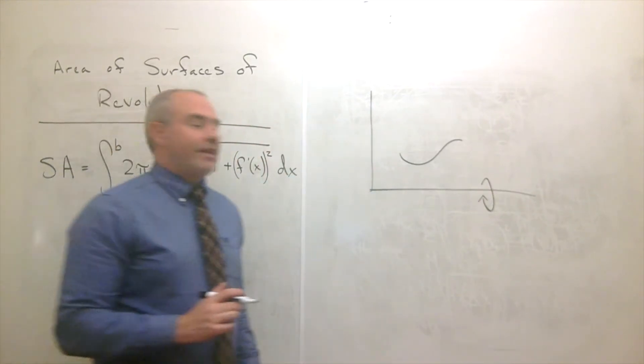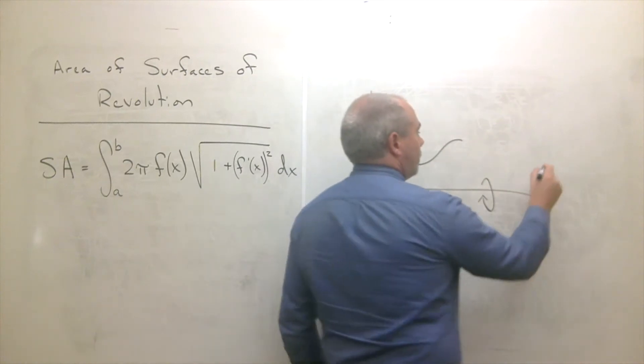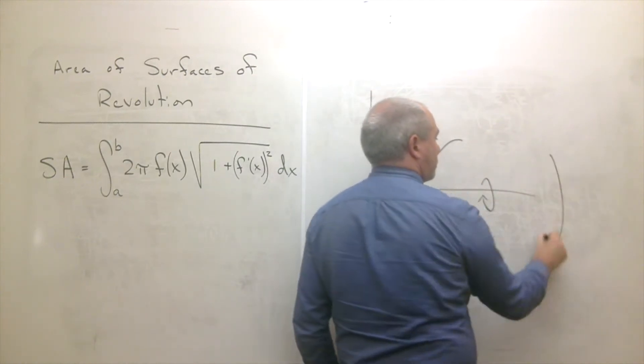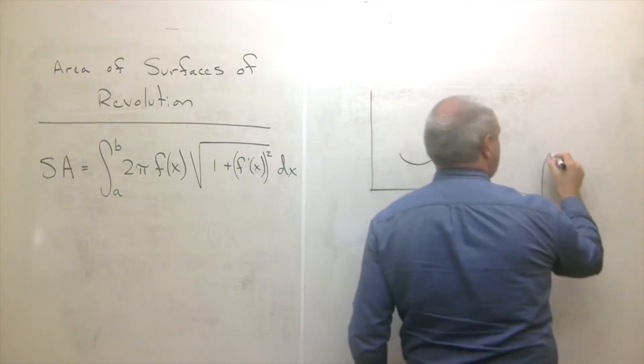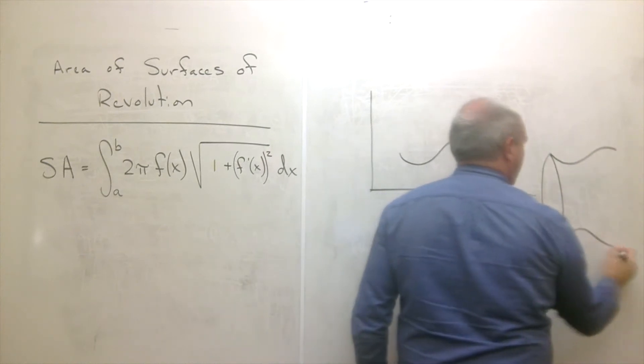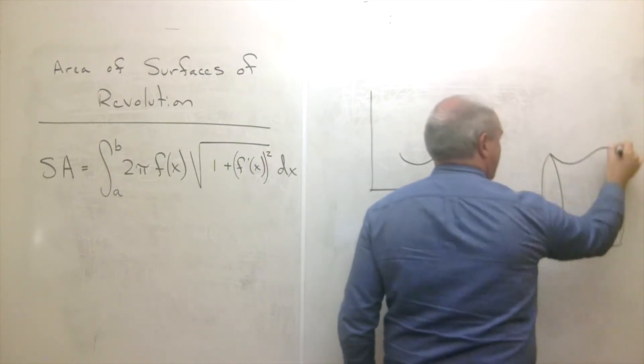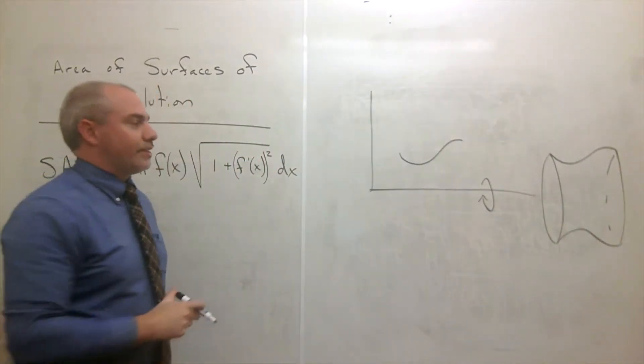Okay, if we spin that thing, what will it look like? Well, I think in this case it would look kind of like some sort of a vase. Okay, something like this.